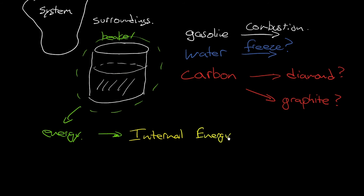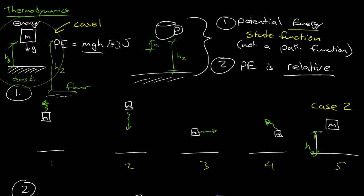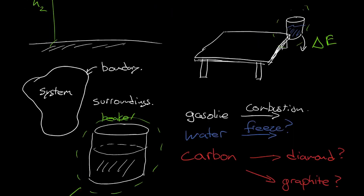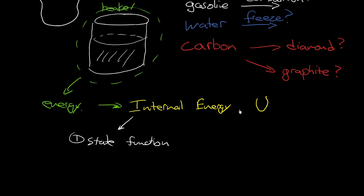The analogy I'm making in this video is to take the classical mechanical example of a mass and potential energy and extend it to internal energy. Internal energy uses the symbol capital U. Similar to potential energy, internal energy accounts for all the energy in the system, and it is a state function — however you arrive at that particular state of internal energy, it doesn't matter how you got there; it's independent of the path.